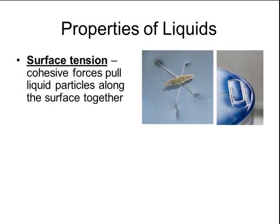Surface tension is another key property of liquids. Surface tension is defined as cohesive forces that pull the liquid particles together that are along the surface. This creates a layer of tension, or skin, across the surface of the liquid. Surface tension is what allows water strider bugs to walk across the water in a pond, or what allows you to float a paperclip on the surface of water in a cup.